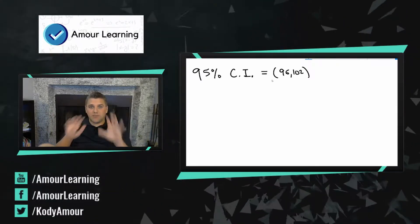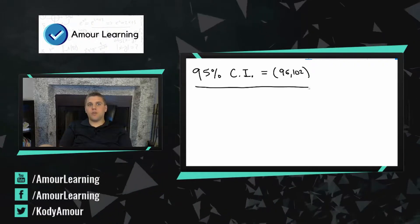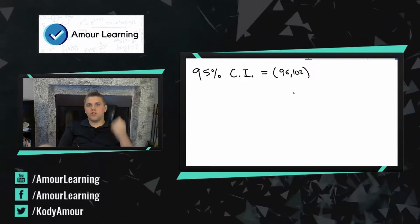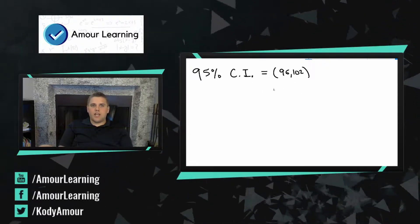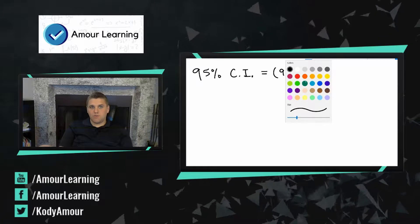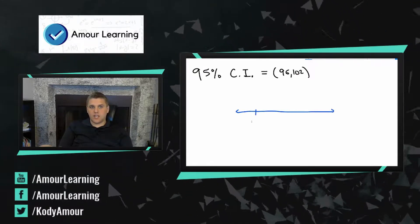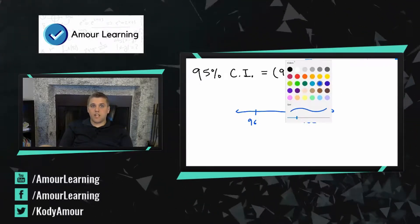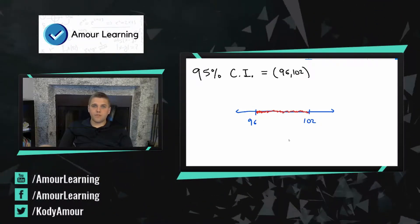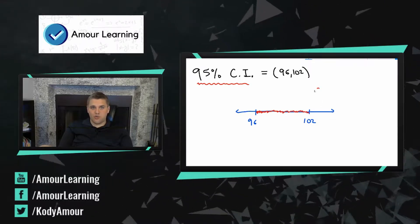We're going to go into some more explicit examples of confidence intervals. There are going to be two portions of this next section. The first portion is to understand what this says right here. This 96 comma 102 is actually a region — it is the region between 96 and 102. It represents all of the numbers between 96 and 102. Basically what this says is: I'm 95% confident that the true average is somewhere in here.